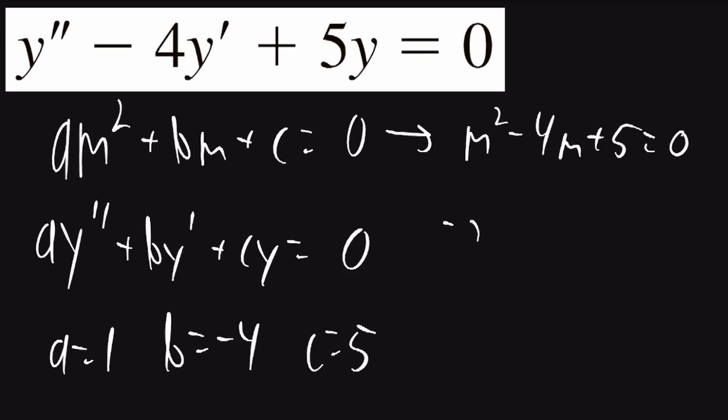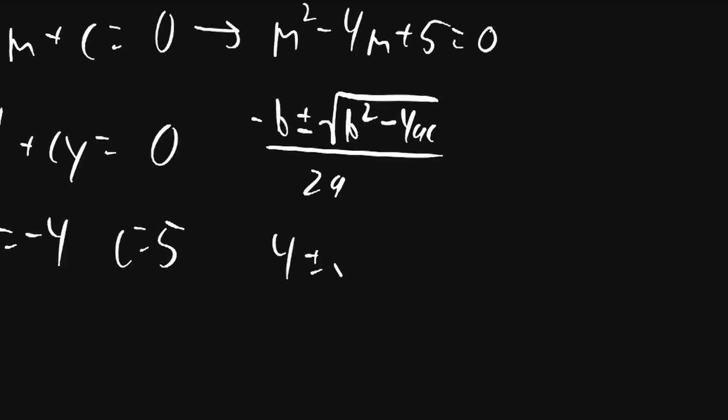We can use the quadratic formula to find the roots. It'll be negative b plus or minus the square root of b squared minus 4ac over 2a. So it'll be 4 plus or minus the square root of 16 minus 4 times 1 times 5 over 2 times 1.